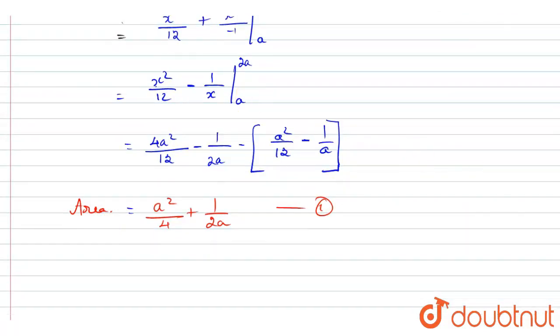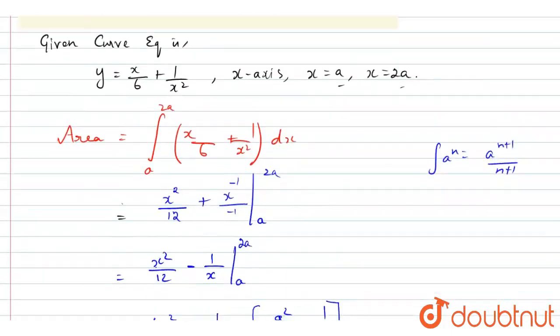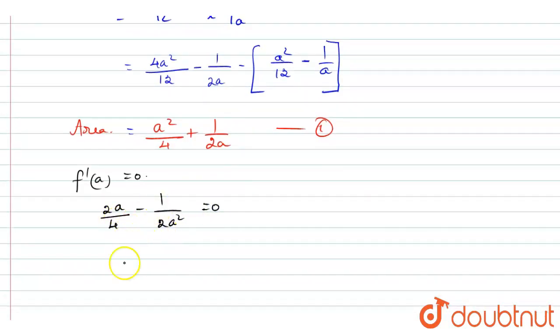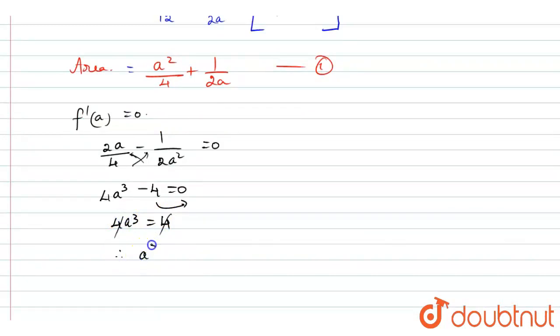Now I'm going to find f dash of a equals 0. F dash of a, we have already found the area. So it will become 2a divided by 4 minus 1 by 2a square equals 0. I'm going to cross multiply, so 4a cube minus 4 equals 0. Then I'm going to move the minus value to the right-hand side, so 4a cube equals 4. Therefore, 4 will cancel, so a cube equals 1. Therefore, a equals 1.